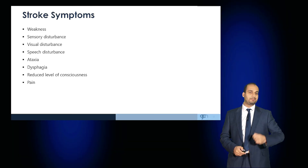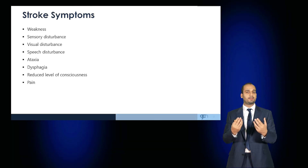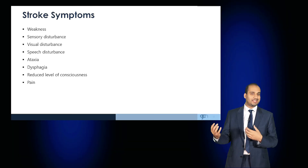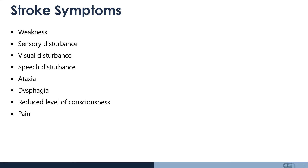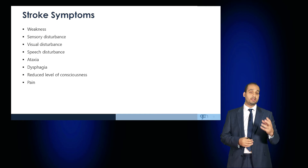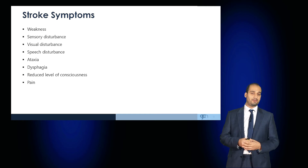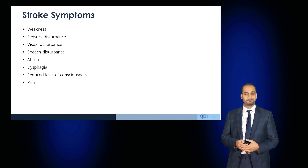Symptoms may present as sudden onset weakness, sensory disturbance, visual disturbance, speech disturbance, ataxia, clumsiness, dysphagia, or even an altered level of consciousness. In the context of a hemorrhagic stroke, severe pain may also be present.